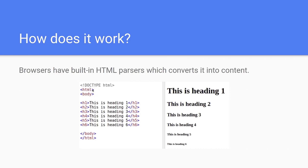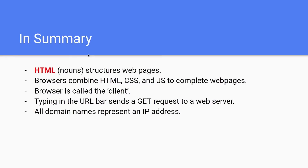All the content is in a body, and in the head tags — which show the metadata of the document — like the title, the scripts, etc. In summary, HTML are nouns that structure web pages. Browsers combine HTML, CSS, and JavaScript to complete web pages. The browser is usually called the client. Typing in the URL bar sends a GET request to a web server. And there are many types of requests: GET, POST, DELETE, PUT. All domain names also represent an IP address.